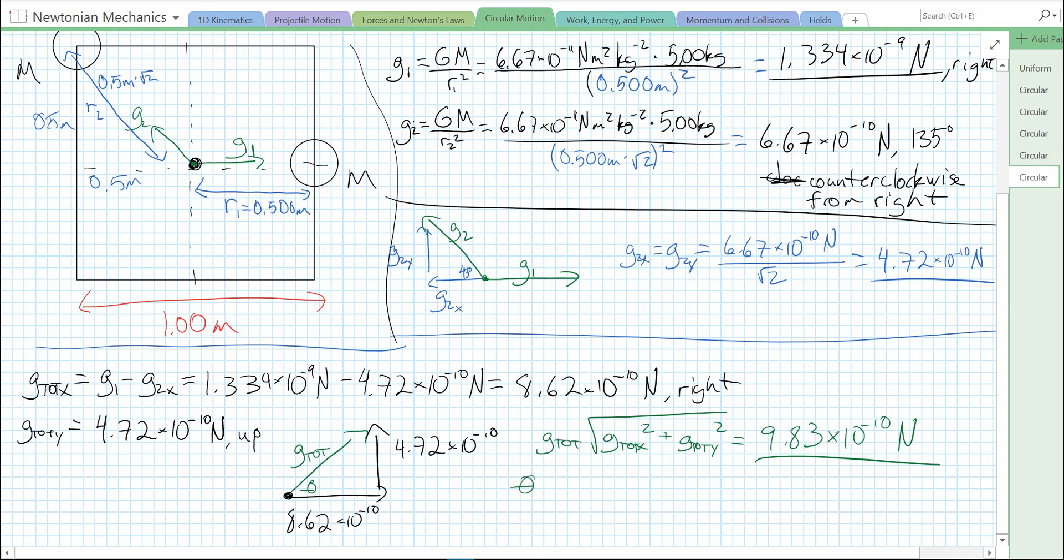And then to find the direction, it's just going to be inverse tan of G total y over G total x. So we plug in inverse tan of 4.72 over 8.62. I'm going to answer in degrees, so I make sure my calculator is in degree mode before I take that inverse tan. And I get 28 degrees. And so it's 28 degrees counter-clockwise from right.